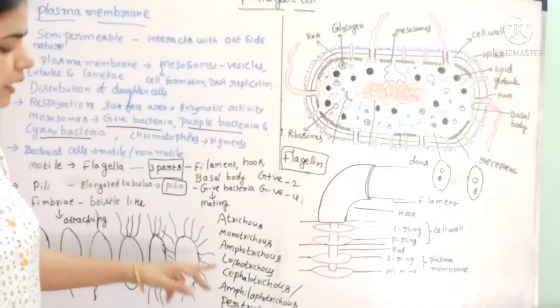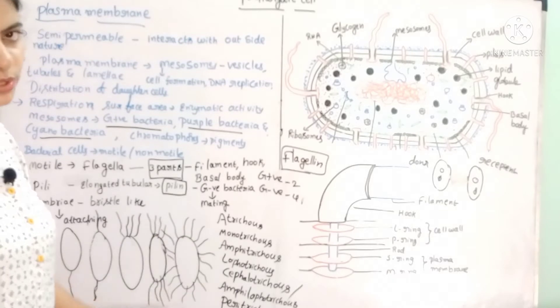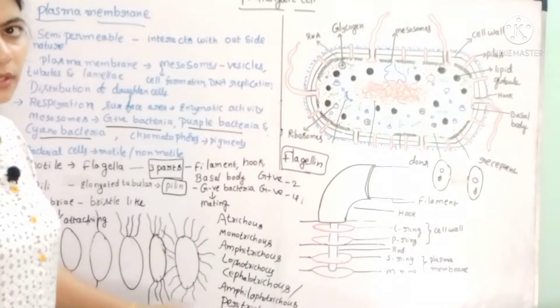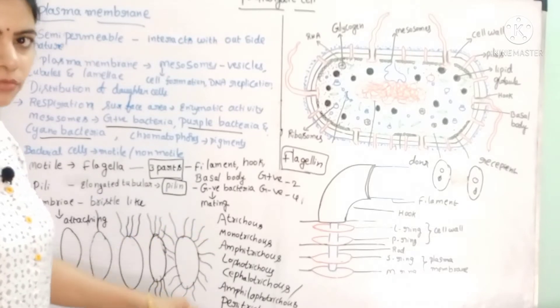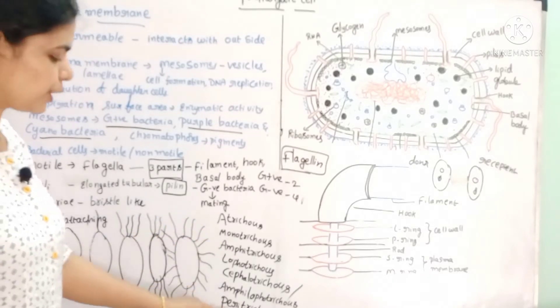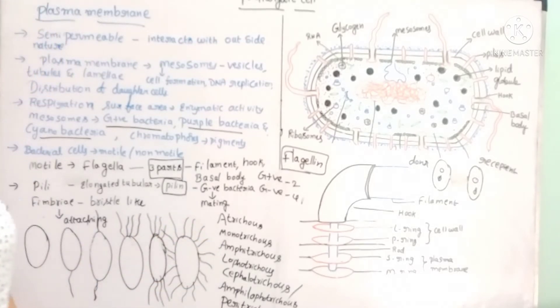When flagella are arranged all around the bacterial body, this condition is called peritrichous — 'peri' means around.